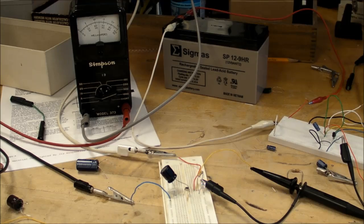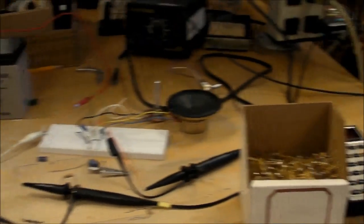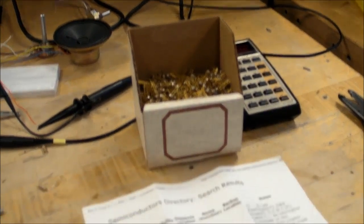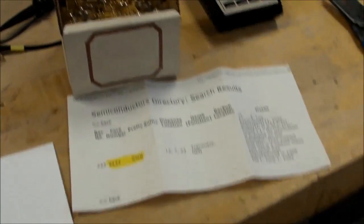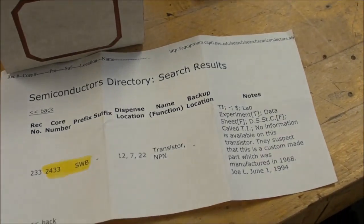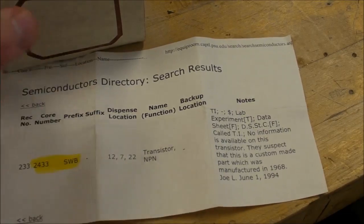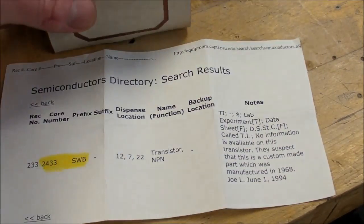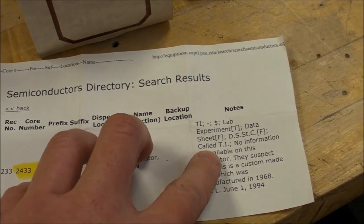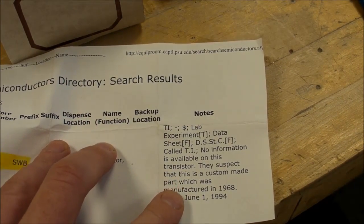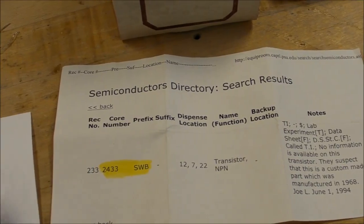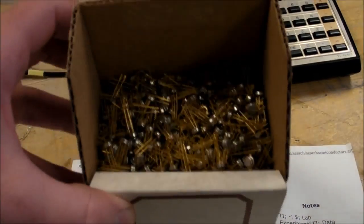But let me first explain how this came about. I started out with this box of transistors right here - the SWB 2433 - and this is the paper that came with the box. There was no other documentation, and apparently Texas Instruments themselves don't have any documentation for this thing either. They say it might be a custom part, so really the only way to learn about them is to throw them on a curve tracer like I have here.